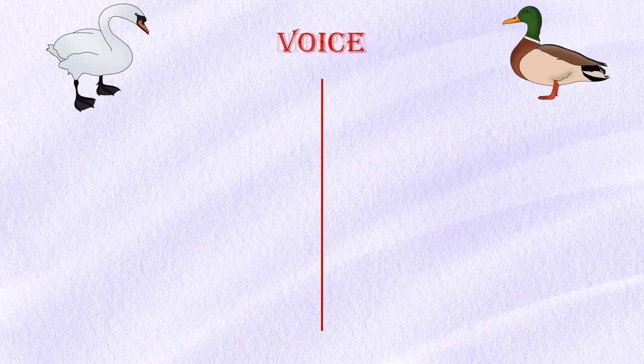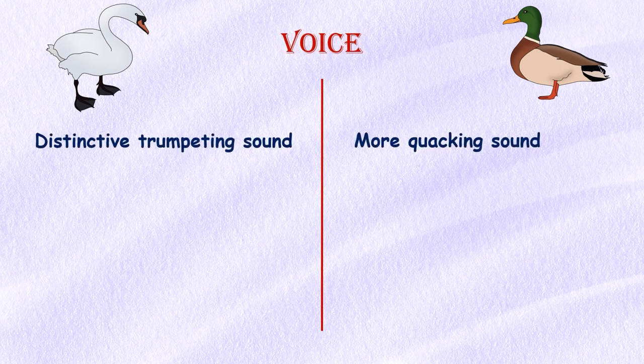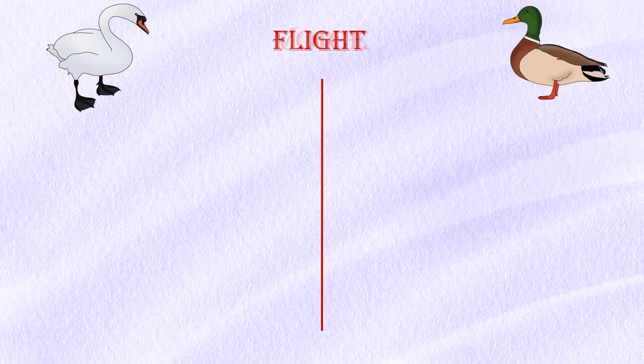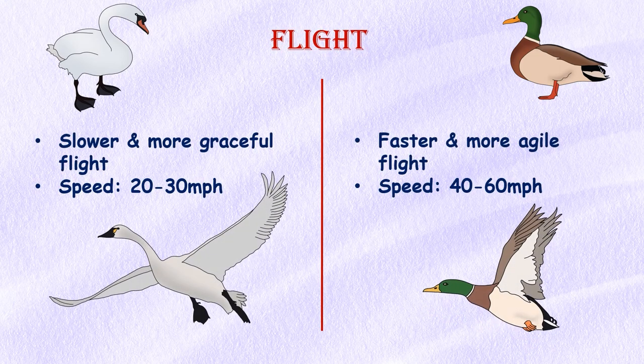Voice: Swans have a distinctive trumpeting call, while ducks have a quacking sound. Flight: Swans have a slower and more graceful flight than ducks, while ducks have a faster and more agile flight. Generally, swans fly at speeds of between 20 to 30 miles per hour, while ducks can fly at speeds of 40 to 60 miles per hour.